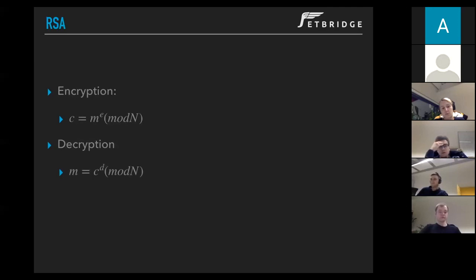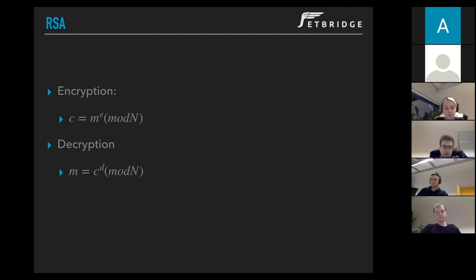When we go through that procedure, we get a pair of keys: the public key and the private key. The encryption and decryption functions are quite simple. As with the one-time pad, we also encrypt and decrypt bit by bit.